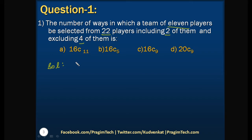That means now total number of players are, out of 22, 2 players are already selected, that means we need not select those two, and 4 players we are not supposed to select. That means we have to exclude those 4. Now total number of players for selection are 22 minus 6 which is 16.